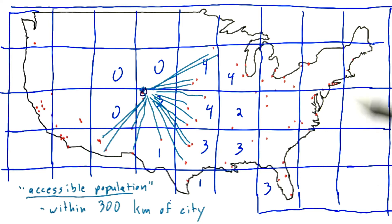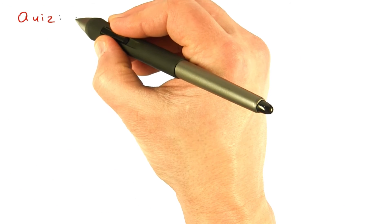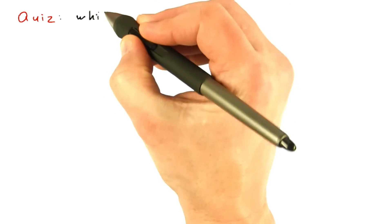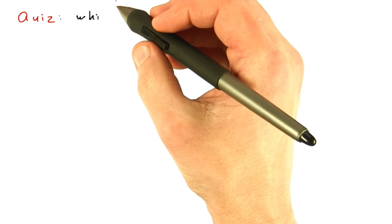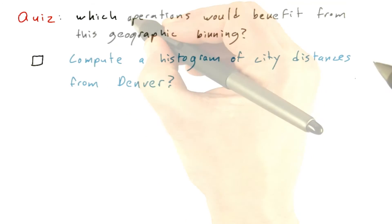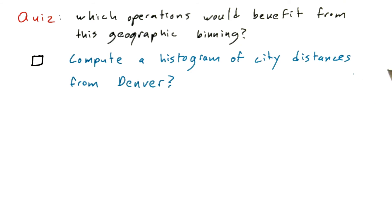So, this is a great example of binning. Here's a quiz: which of the following operations would probably benefit from the geographic binning described above? Suppose that for all U.S. cities in the list, we wanted to compute a histogram of city distances from a central warehouse in Denver, Colorado.